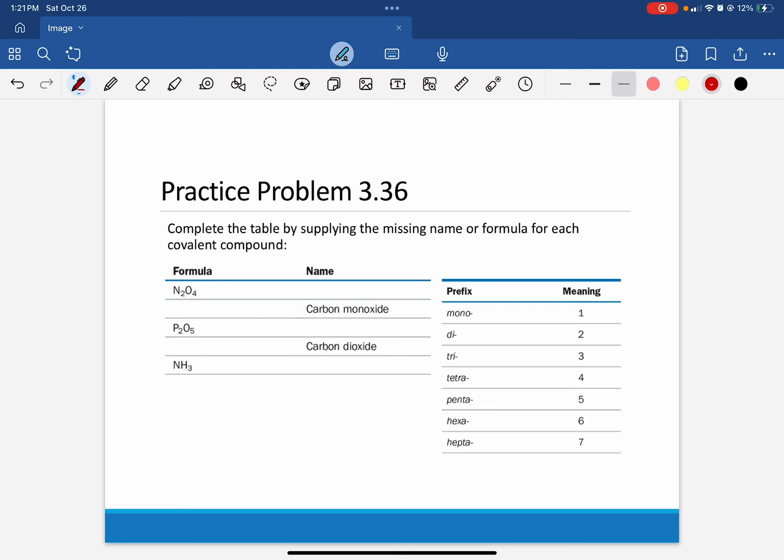So for covalent compounds, we are going to use the Greek prefix system for naming, which is to the right of our example problem table. And these prefixes are going to come before the element so that we can tell the interpreter or scientist how many of each atom is present for each atom listed in a molecular formula.